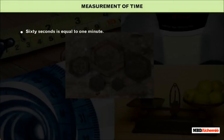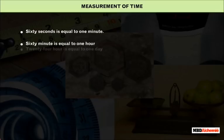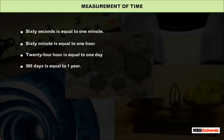The following relations apply for units of time: 60 seconds is equal to 1 minute, 60 minutes is equal to 1 hour, 24 hours is equal to 1 day, and 365 days is equal to 1 year.